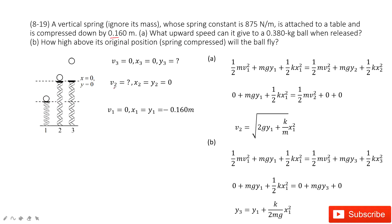And then at position two, we can see the velocity is what we need to know. But because we choose this one as a reference point, so x2 equal to y2 equals zero.